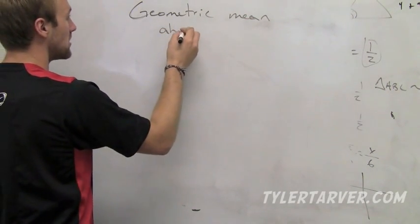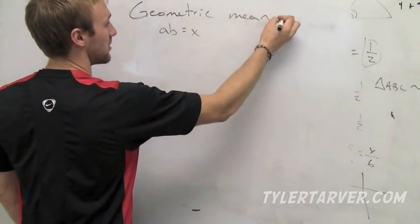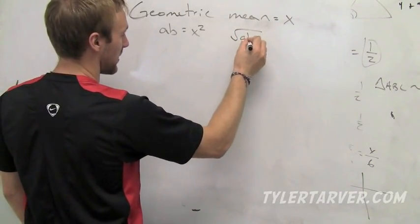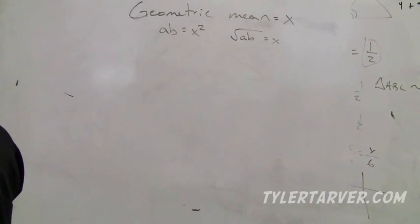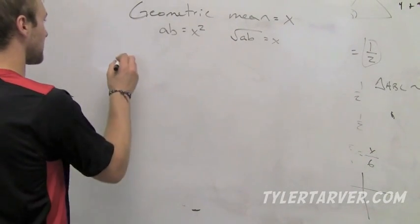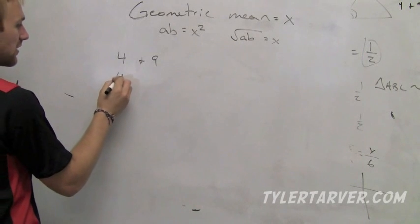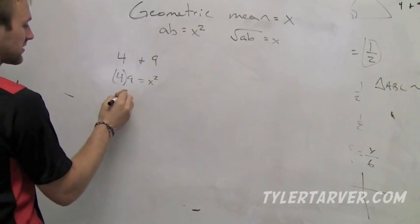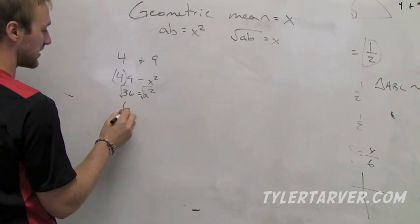Geometric mean: two numbers like a times b equals their geometric mean, which is x. Geometric mean equals x squared. So you can write it this way: square root of a times b equals our geometric mean. Let's say we got 4 and 9. We're gonna find the geometric mean: 4 times 9 equals x squared. 4 times 9 is 36. Square root, so 6 equals x. That's the geometric mean.